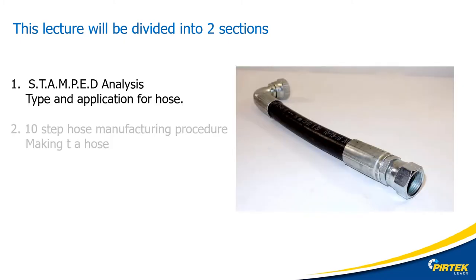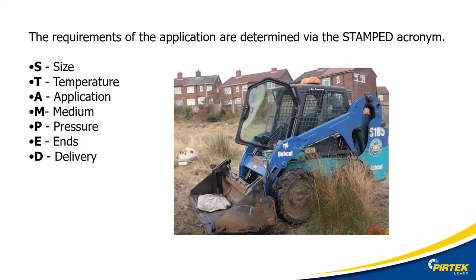Section one: the STAMPT Analysis. STAMPT is an acronym used in the industry for the identification of hoses and hose assemblies. S is for size, T is for temperature, A is for application, M is for medium, P is for pressure, E is for ends, and D is for delivery. Let's take a closer look at these items.